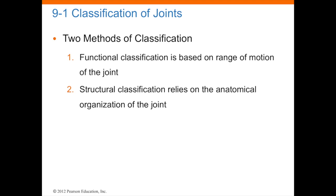There are two methods of classifying movement or articulations. Number one, functional classification is based on the range of motion of that joint. Some joints, like the shoulder, can move in any direction for the most part, compared to joints like your ischial tuberosity of the hip — basically all you can do is sit on the ischial tuberosity. Your knee can just go forward and back in knee extension and flexion, compared to the multiple movements the shoulder can. Number two, structural classification depends on the anatomical organization — how many bones are at the joint and what is connecting those bones.